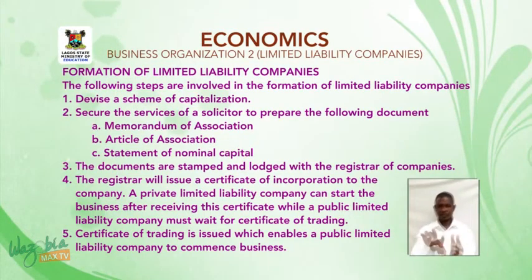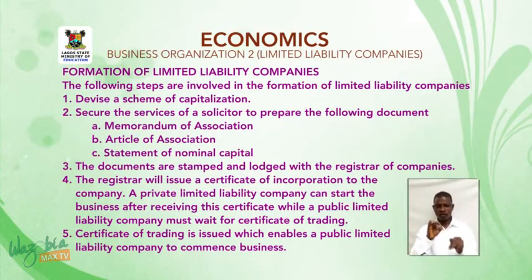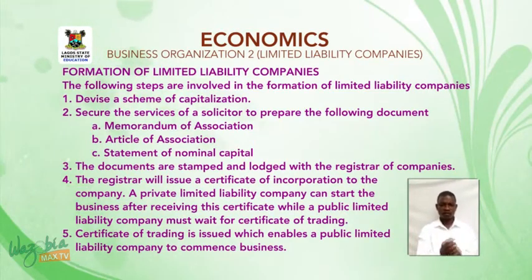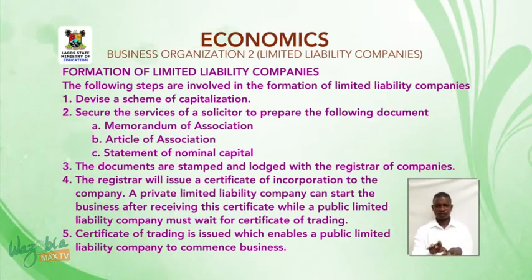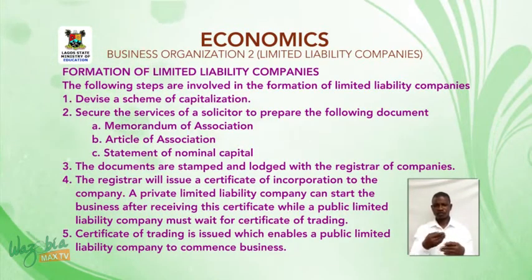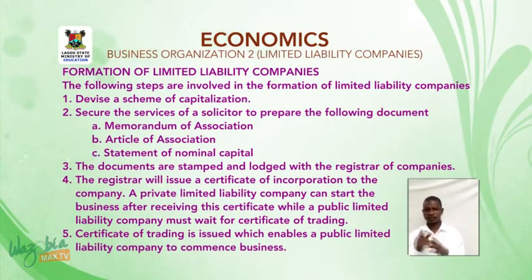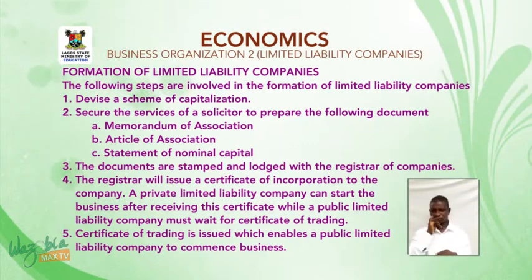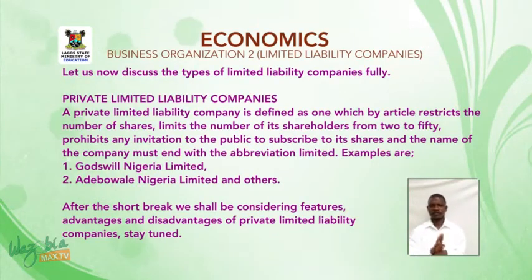The registrar will issue a certificate of incorporation to the company. A private limited liability company can start business after receiving this certificate. A public limited liability company must wait for a certificate of trading. The certificate of trading is issued, which enables a public limited liability company to commence business. Let us now discuss the types of limited liability companies fully.